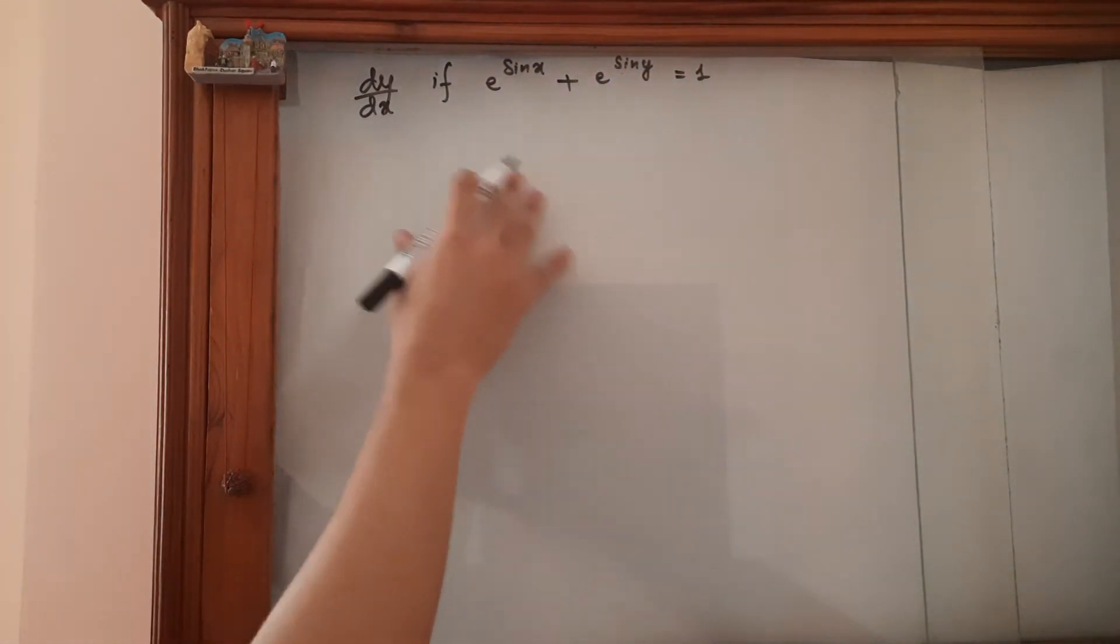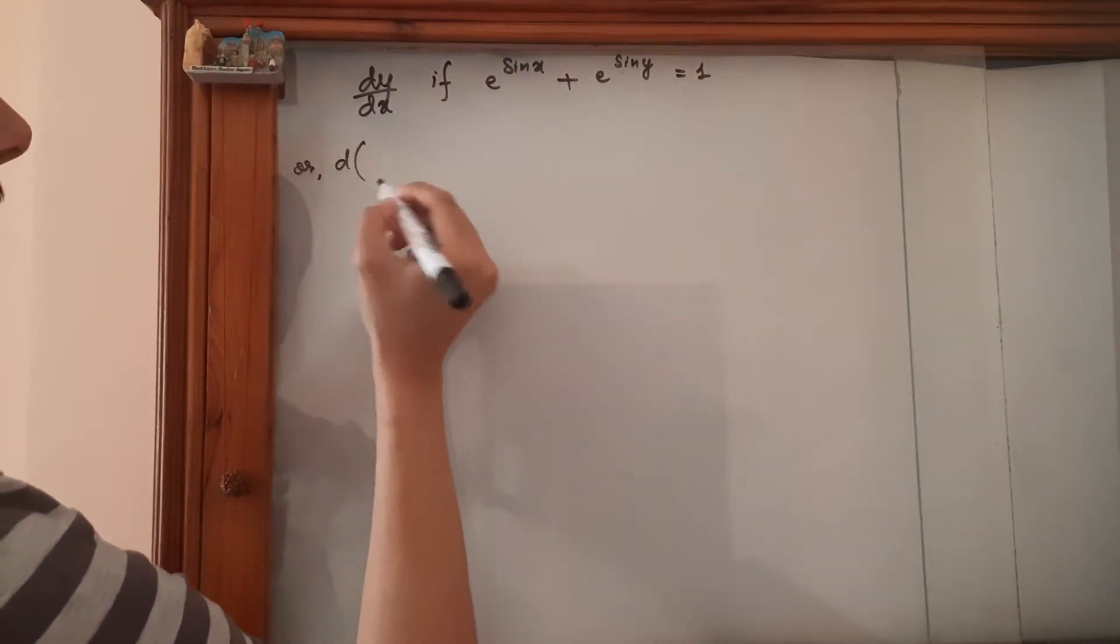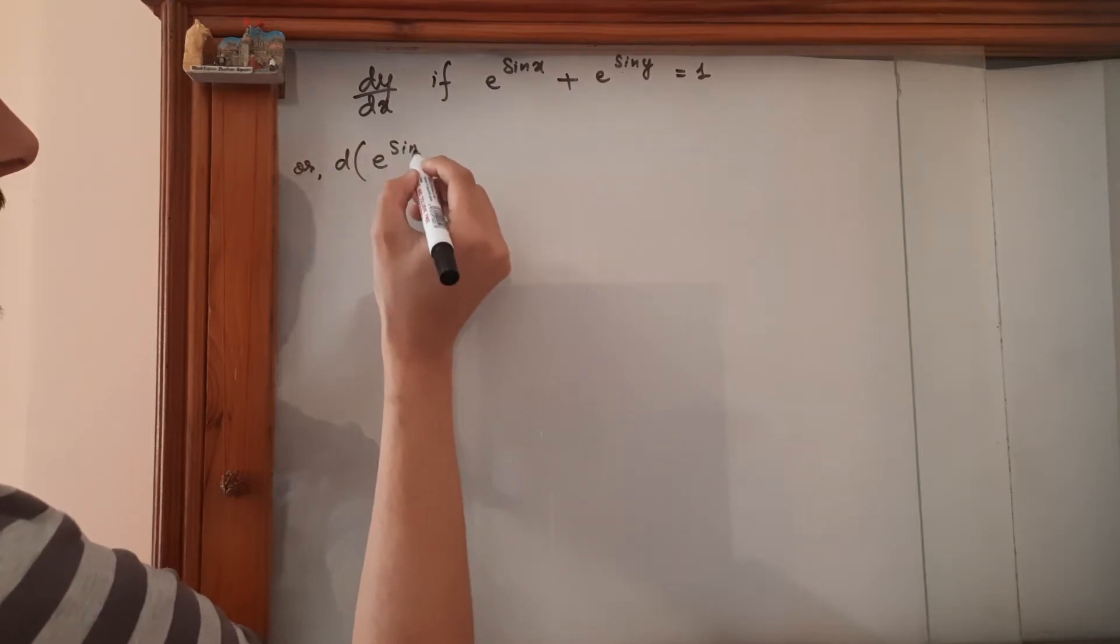So to start off we are just going to differentiate both sides with respect to x. So e to the power sine x,